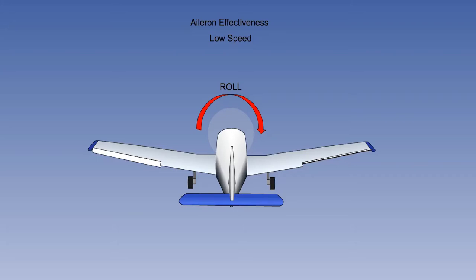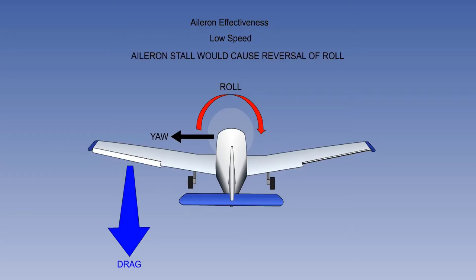To obtain the required response, greater deflection must be used at low speed. The down-going aileron will add to the yawing moment from increased induced drag, and may even stall the outer section of the wing at low IASs.